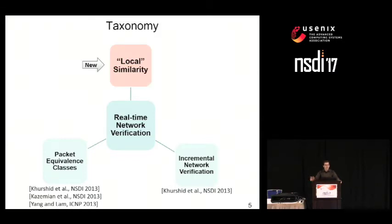What is new in DeltaNet, the topic of this talk, is that we explored a third characteristic of the problem: similarity of forwarding behavior of packets through parts of the network. To illustrate why this is significant, we have to better understand incremental network verification as used by Veriflow. So let's have a closer look at it.